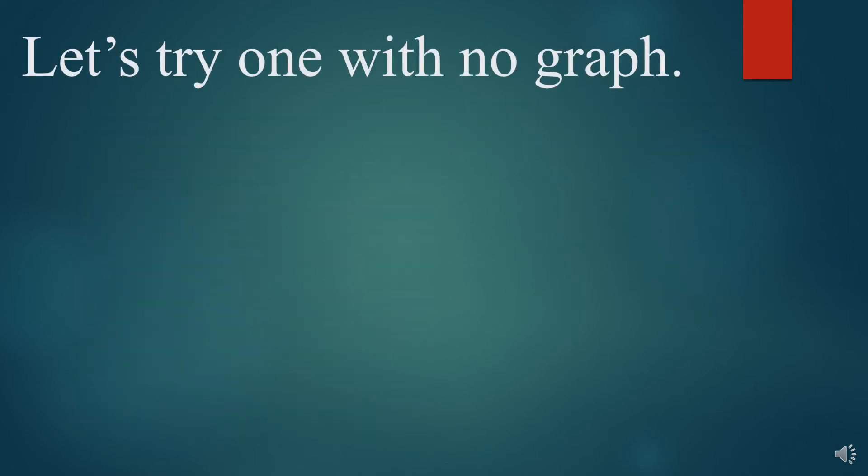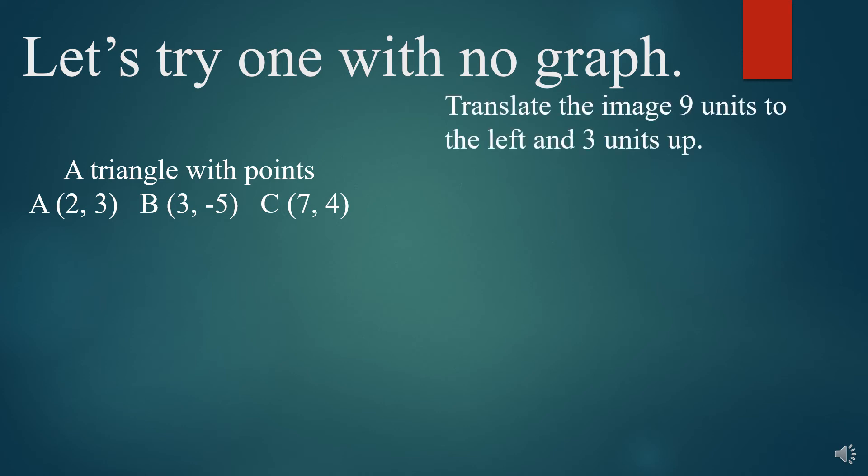Now let's try one without a graph. Let's suppose you have a triangle, and these points are (2, 3), (3, -5), and (7, 4), and you're asked to translate the image 9 units to the left and 3 units up. Now we're not going to draw a graph this time. We're going to do it purely mathematically.